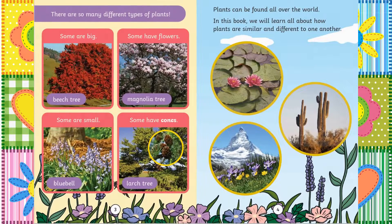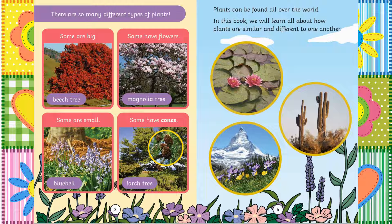There are so many different types of plants. Some are big, like the beech tree. Some have flowers, like the magnolia tree. Some are small, like the bluebell. Some have cones, like the larch tree. Plants can be found all over the world. In this book, we will learn all about how plants are similar and different to one another.